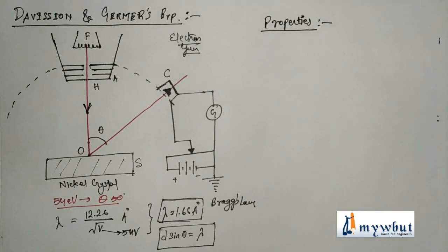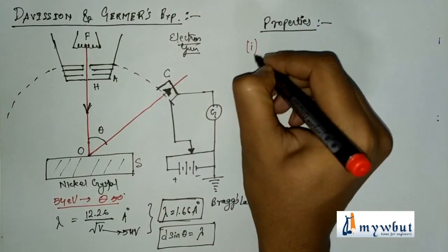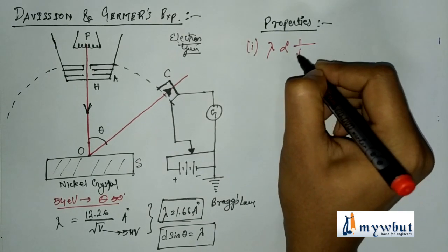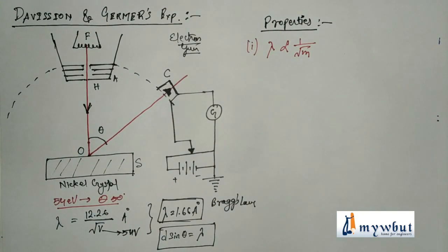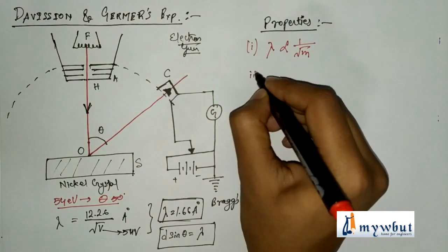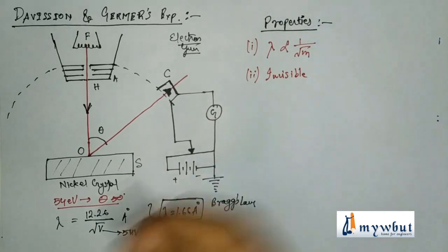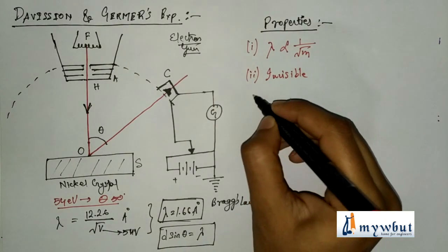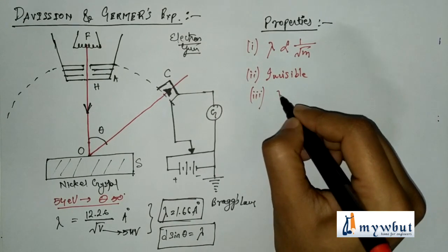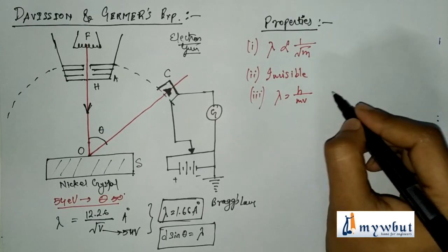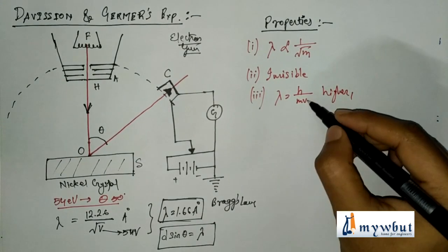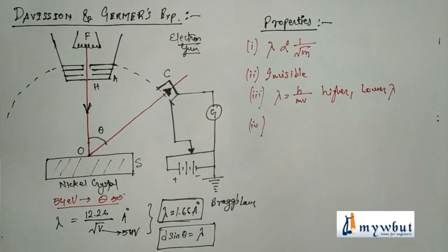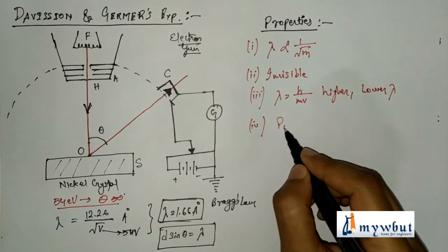The properties of De Broglie waves are: (1) The wavelength λ is inversely proportional to the mass of the particle — the lighter the particle, the greater its wavelength. (2) Matter waves are invisible; they cannot be seen. (3) The faster the particle moves, the smaller its De Broglie wavelength — since lambda = h/mv, higher velocity means lower lambda.